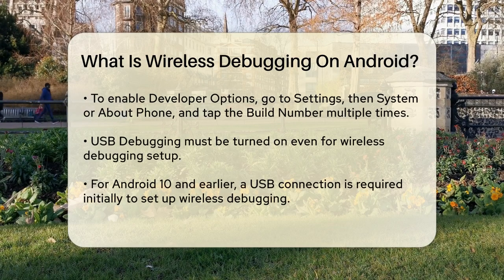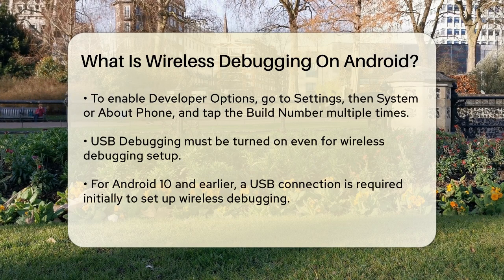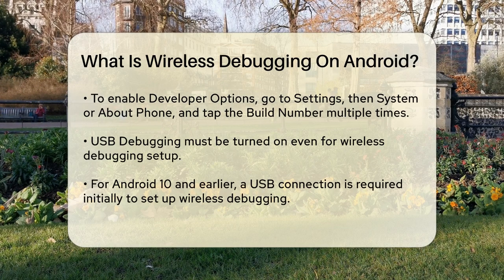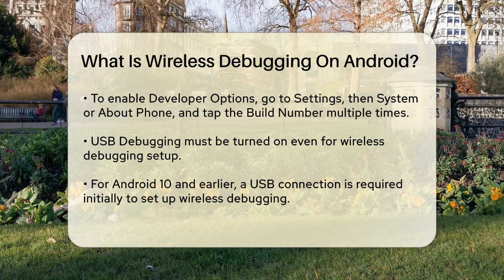Next, you need to enable developer options on your Android device. This step varies slightly depending on the device, but generally you go to Settings, then System or About Phone, and tap the build number several times to unlock developer options.